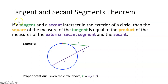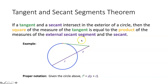Next let's talk about the tangent and secant segments theorem. This says if a tangent and secant intersect in the exterior of a circle, then the square of the measure of the tangent is equal to the product of the measures of the external secant segment and the entire secant. Here we have a tangent touching the circle at one point and a secant. The theorem states: T squared is equal to Y times the quantity Y plus Z.